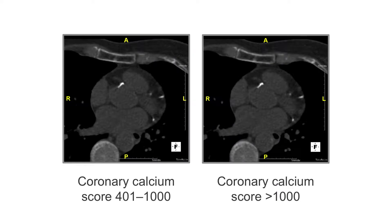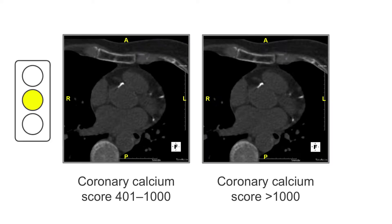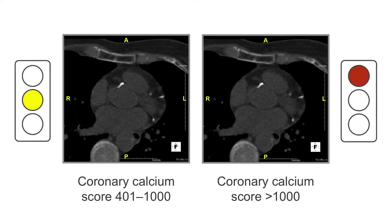In terms of coronary calcium scanning and whether one should proceed to formal coronary CTA evaluation, bearing in mind that the diagnostic accuracy decreases with an increase in calcium, it is uncertain whether coronary CTA is the correct approach in a patient with a coronary calcium score of 401 to 1,000 Agatston units. It is considered inappropriate for patients with a coronary calcium score greater than 1,000 Agatston units to perform or undergo coronary CT angiography.